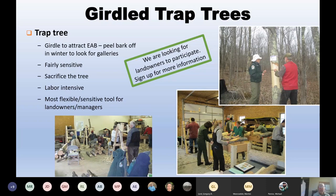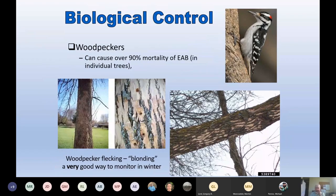So if you can create trap trees in areas where there are lots of ash — especially in areas that are somewhat close to the leading edges — then as soon as we find EAB in those trap trees, we can move right ahead on starting to release biocontrol as soon as we can get it. Speaking of biological control, right now in Maine woodpeckers are our best biological control. In basically any infestation, in the early stages, woodpeckers are the best biological control. They can cause over 90% mortality within individual trees. They tend to go back to a tree again and again until they've basically cleaned it out of all EAB — they are a really strong biocontrol agent.